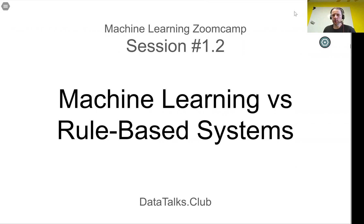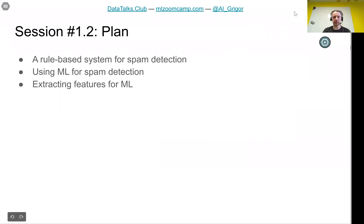Welcome to the second lesson of our first session of Machine Learning Zoom Camp. We will compare machine learning systems with rule-based systems. In the previous lesson we talked about predicting the price of a car, and now we will compare the old way of doing things without machine learning versus using machine learning, illustrated using a spam detection example.